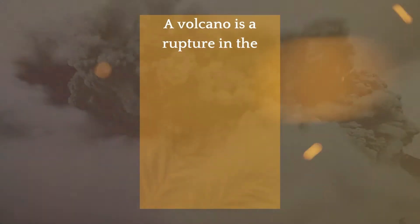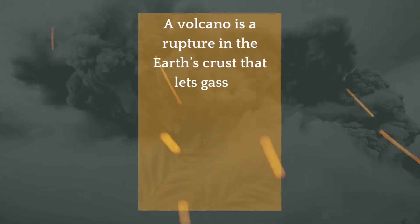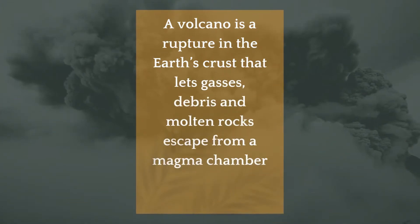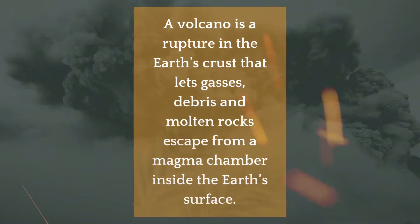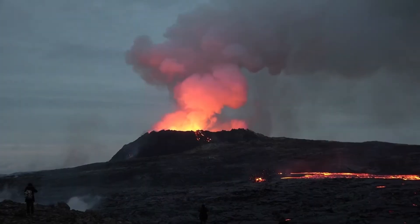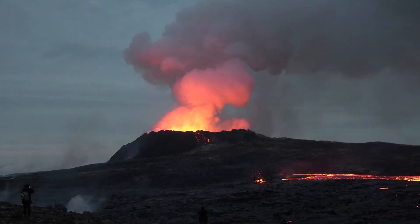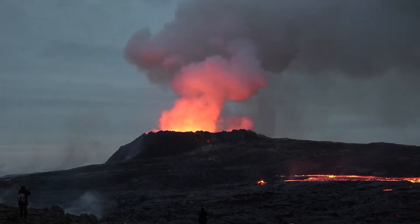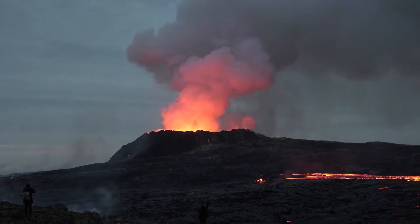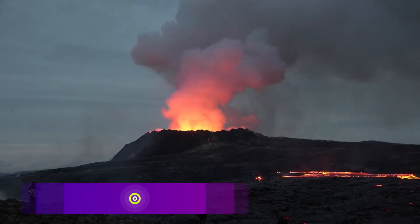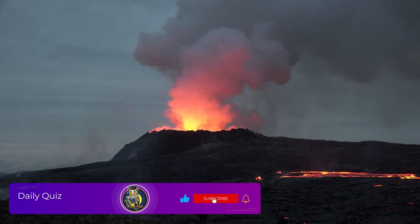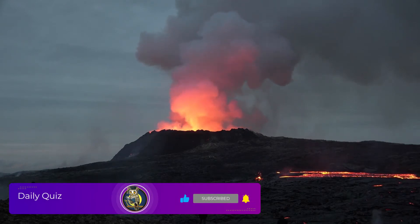A volcano is a rupture in the earth's crust that lets gases, debris, and molten rocks escape from a magma chamber inside the earth's surface. During volcanic activities, debris and lava can flow at a velocity of up to 100 miles per hour, demolishing everything in their way. Volcanic ashes can spread across hundreds of kilometers and can inflict fatal health problems.